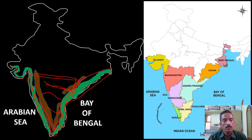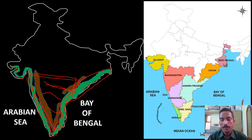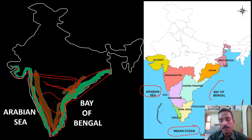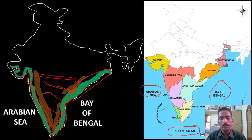In summary, India has nine coastal states with water bodies on three sides: the Arabian Sea to the west, the Indian Ocean to the south, and the Bay of Bengal to the east. Thank you for watching — please subscribe and share for more social studies videos.